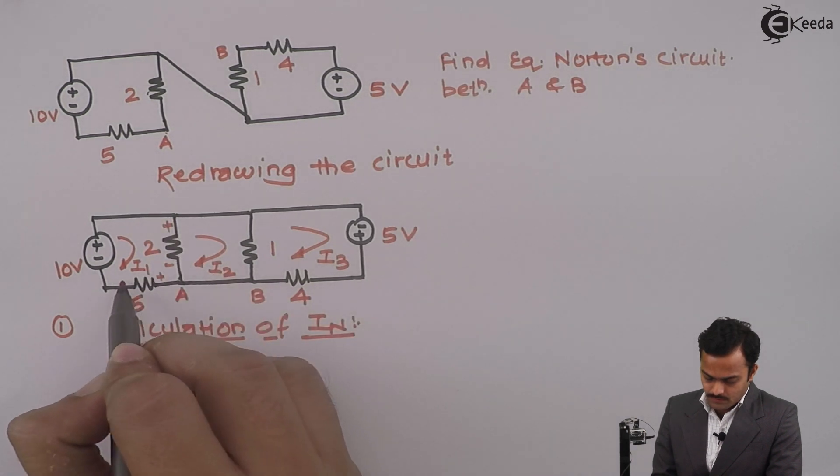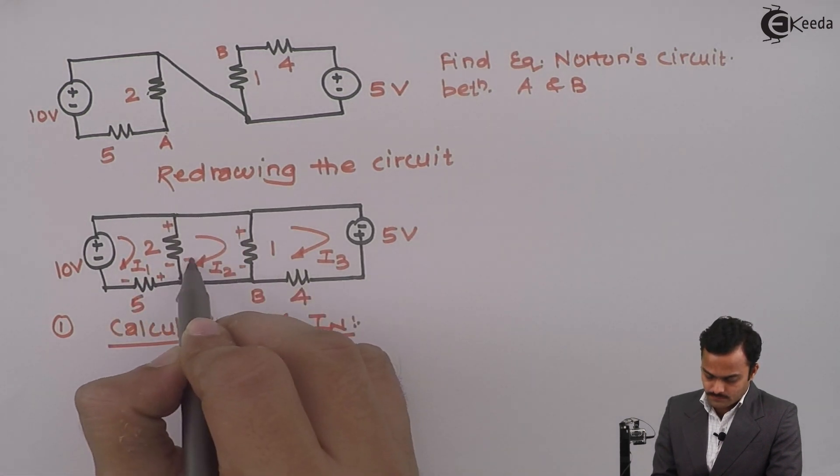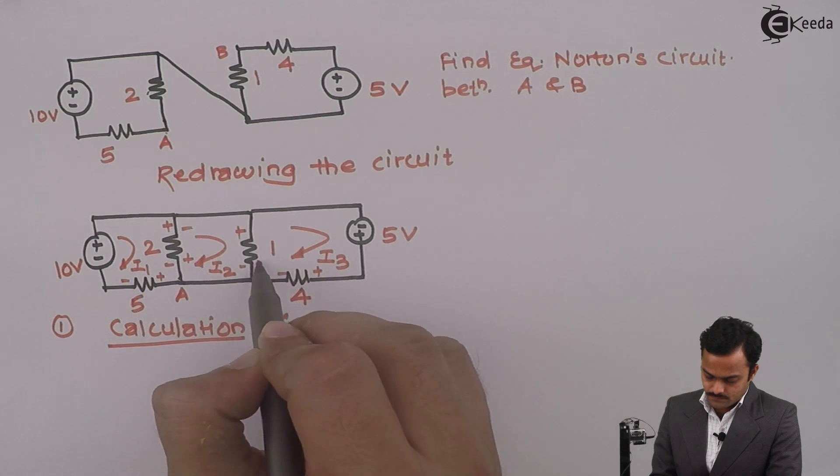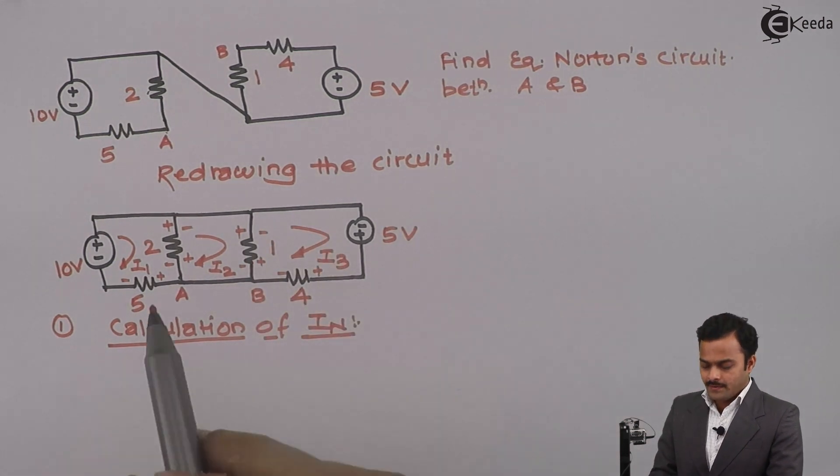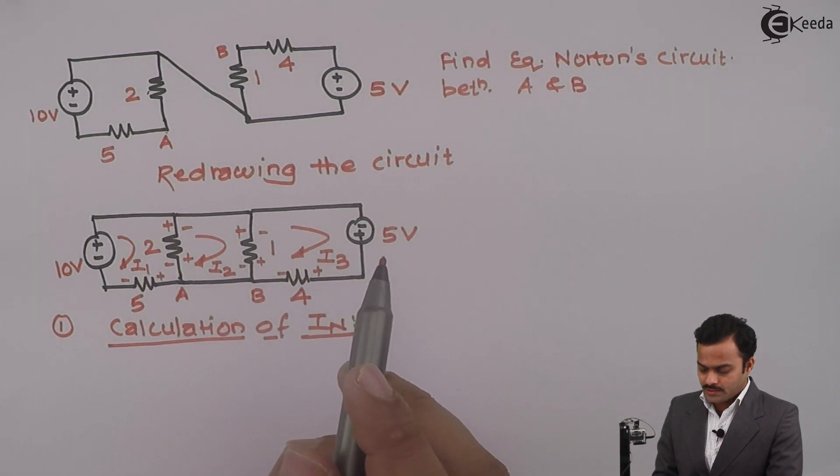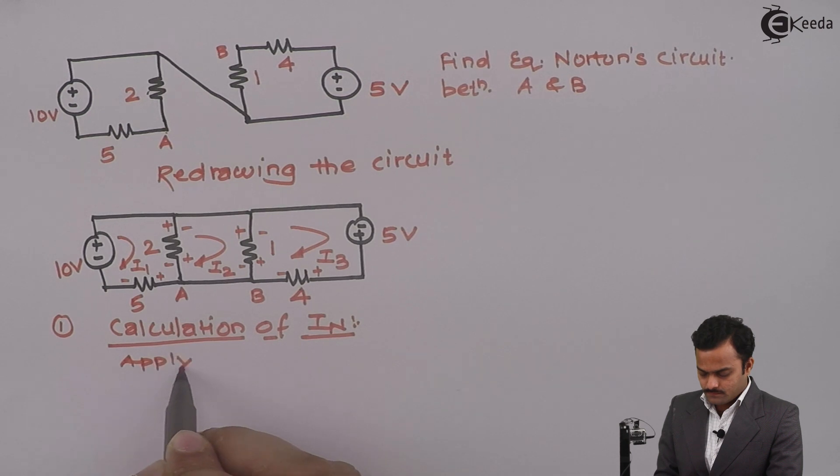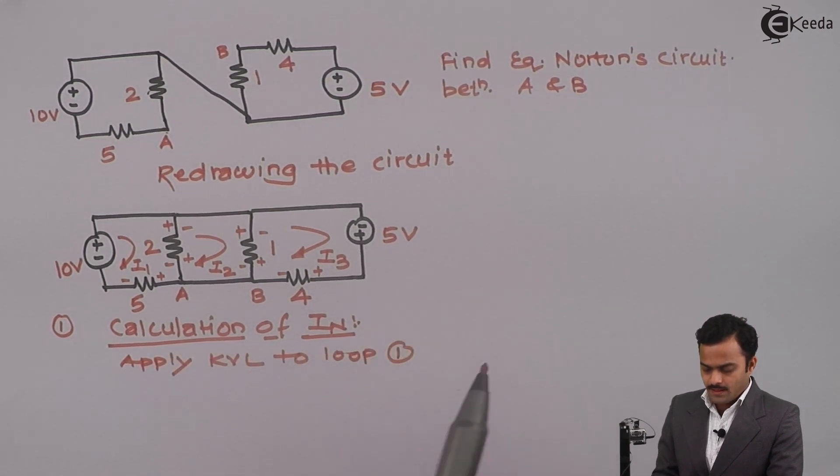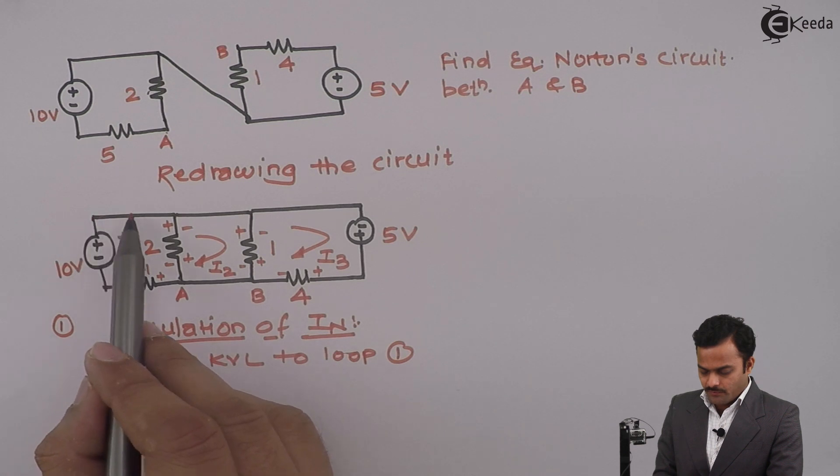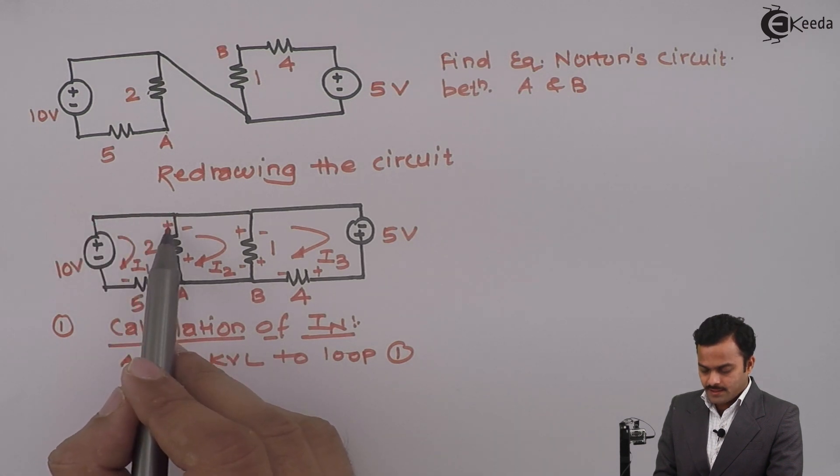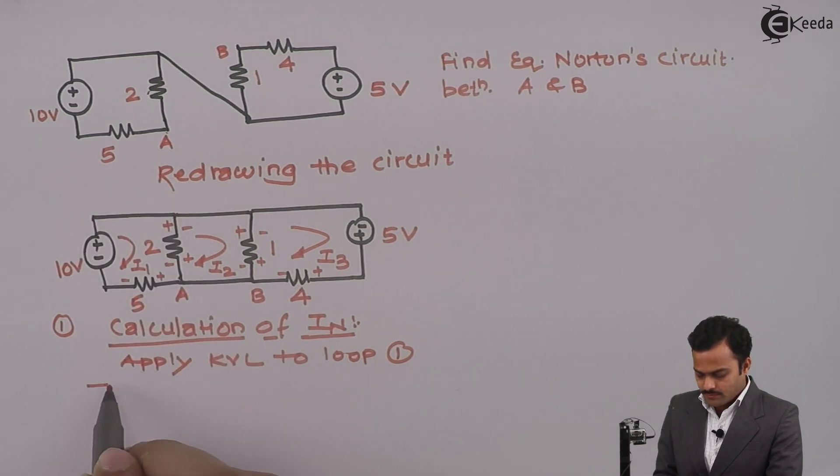Now all the elements have voltages associated with them. Let's apply KVL to loop number one. I will start from this point. From here to here there is no element. Plus minus, so it's minus 2I1, minus plus plus 2I2, plus minus minus 5I1, minus plus plus 10 equals 0.